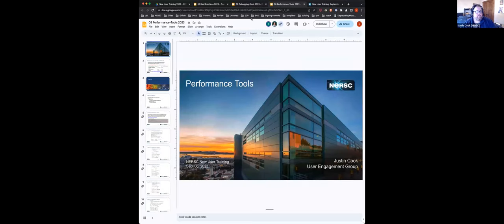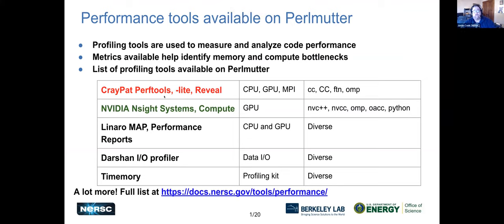Now moving on to performance tools. There are many performance tools available, similar to debugging tools — they all show similar things but in different ways, and each has different support for different languages and programming models. Cray has several tools under the CrayPAT name: CrayPAT Lite, Reveal, and Apprentice 2. These work on everything on a Cray system except Python. NVIDIA's Nsight Systems are mainly for GPUs and work with the NVIDIA programming environment or Python.